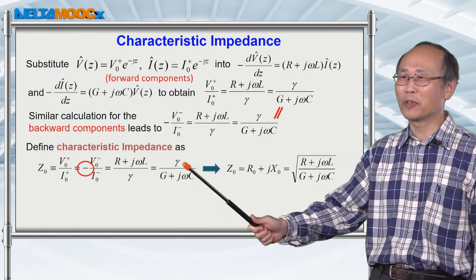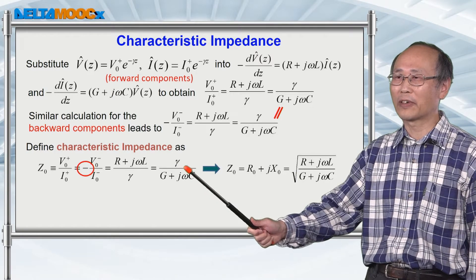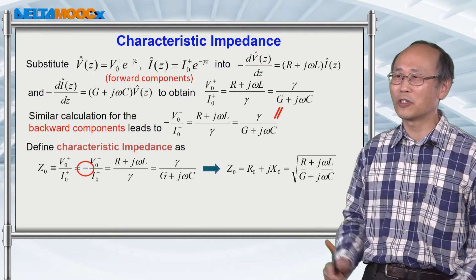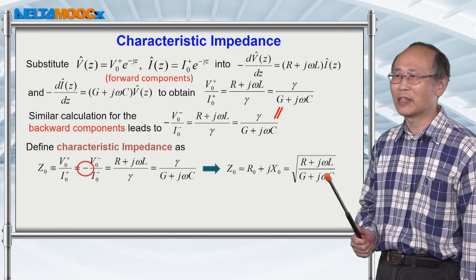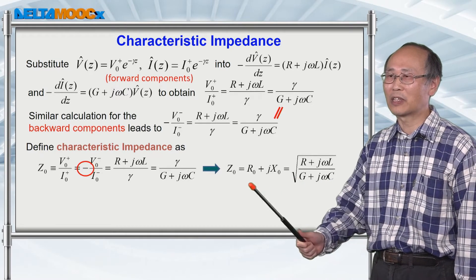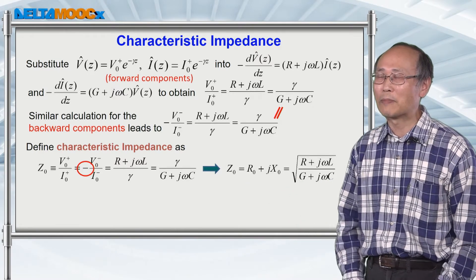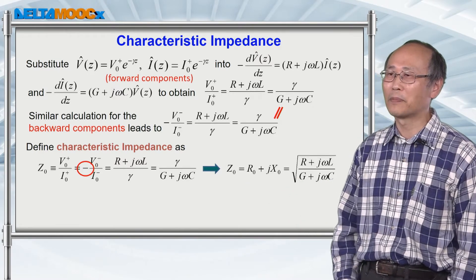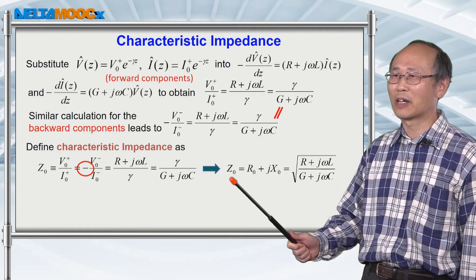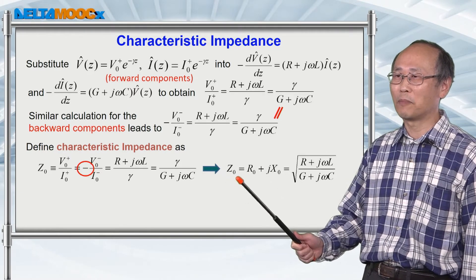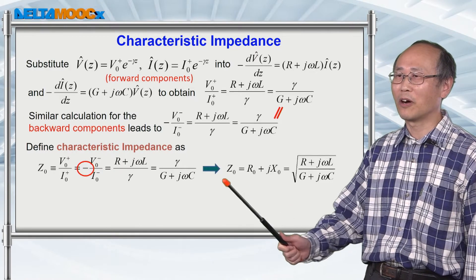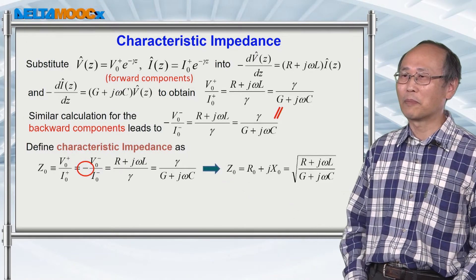If you put the definition of gamma into this ratio, you end up having this expression with a real part and also an imaginary part. This is the resistive part of the characteristic impedance, and this is the reactive part of the characteristic impedance.